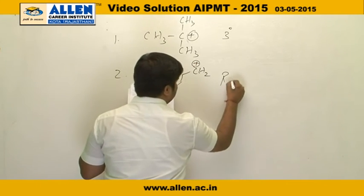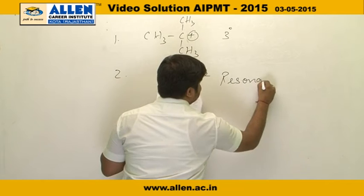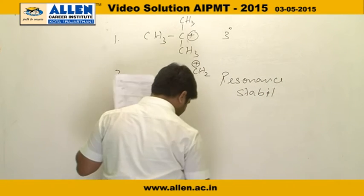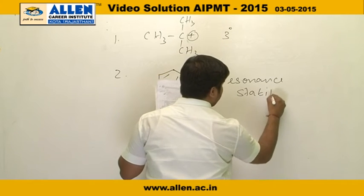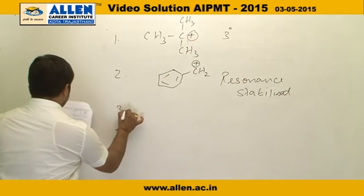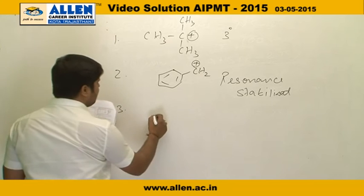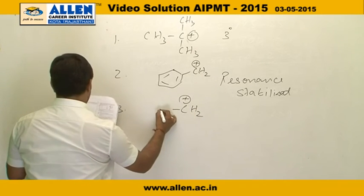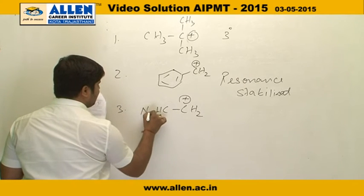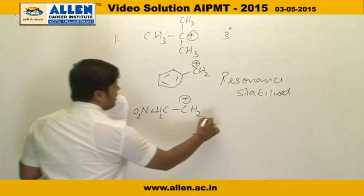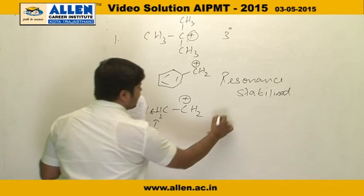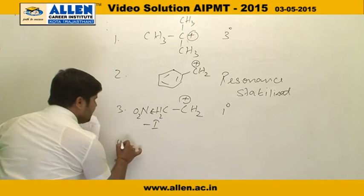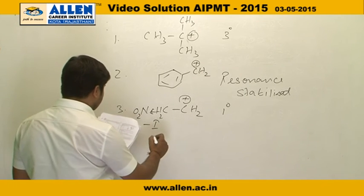The second carbonium ion is a resonance stabilized carbonium ion. The third carbonium ion formed is CH2⁺ with an NO2 group, in which NO2 will have a minus I effect. It is a primary carbonium ion with the minus I effect operating, which will destabilize the carbonium ion.